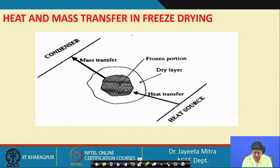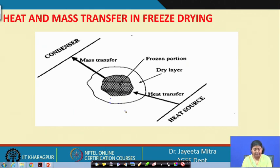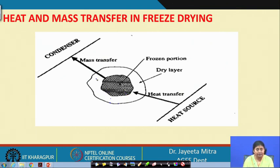In case of freeze drying, we first have a food sample and we freeze it by lowering the temperature. All the moisture in the food becomes frozen, converted to ice, and after that we apply heat to the material. As the heat is transferred to the frozen layer, it will directly sublime under the reduced vacuum condition, and that vapor will be taken out by a vacuum pump.